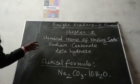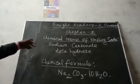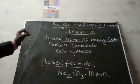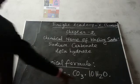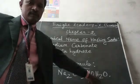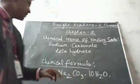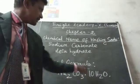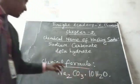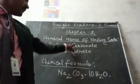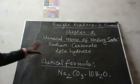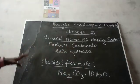See that, what is the chemical name of washing soda? Sodium carbonate decahydrate. See that, 10 molecules of water — water molecule is there, 10 molecules. So, deca means 10. Hydrate represents water. So, sodium carbonate decahydrate. That's only the chemical name of washing soda.